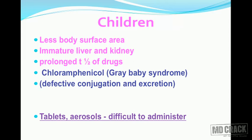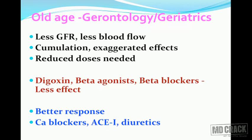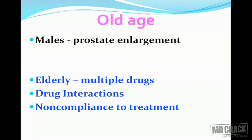It might also be difficult for children to use tablets or aerosols which are difficult to administer. Old age is another important issue — geriatric pharmacology deals with these. At old age, patients have less glomerular filtration rate, less blood flow, and accumulation of various drugs is likely, producing exaggerated effects. Digoxin and beta-agonists tend to produce less effect at old age, whereas calcium channel blockers, ACE inhibitors, and diuretics produce a better response.